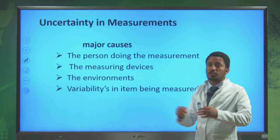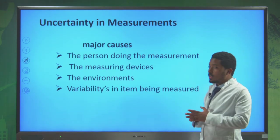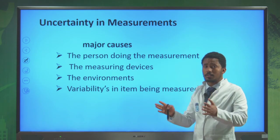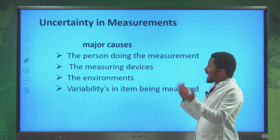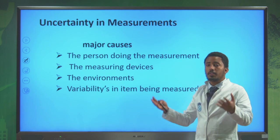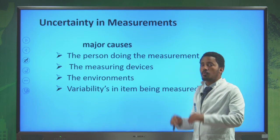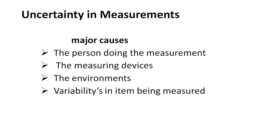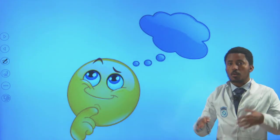While doing measurements, there is always the possibility of mistakes — we call this uncertainty in measurements. The major causes of these uncertainties are: the person doing the experiments, the measuring devices, the environment (such as temperature, pressure, volume, or air), and the variability in the items being measured.